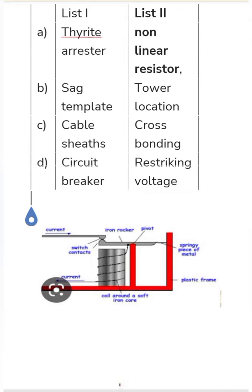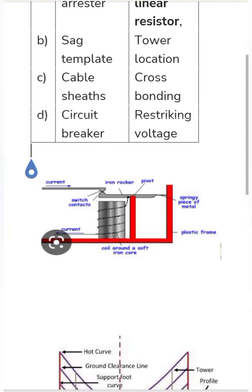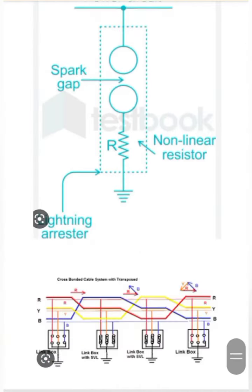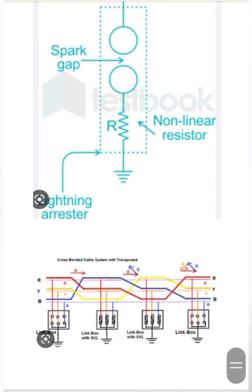Cable sheath cross bonding is the next item. This involves the cable and the cable wire, and it is used to bond the cable sheath.